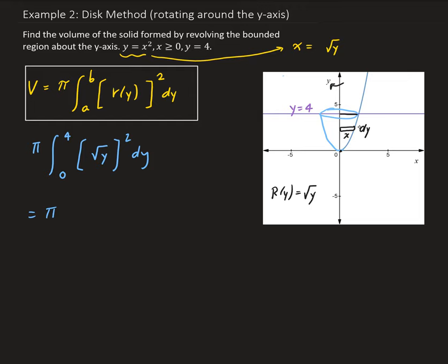So we're going to have pi times the integral going from zero to four of y dy. So taking the integral of y, we're going to get y squared over two. Then we evaluate this from zero to four. So plugging in four, we're going to square that and divide by two. So we're going to get 16 over two, so that's going to give us eight. So we end up getting eight pi. And then plugging in zero will give us zero. So our volume is eight pi.